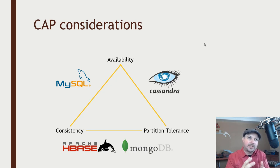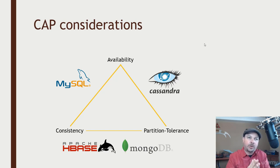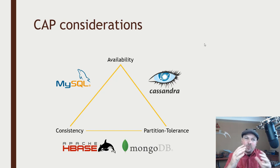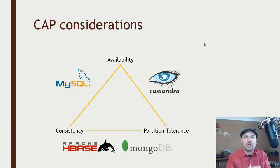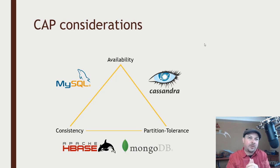Consider Cassandra — is it really trading off consistency for availability and partition tolerance? You can actually configure the amount of consistency you want from Cassandra. You can tell it you want to get back the same result from every replica before you consider that transaction final. If you're running it in that mode, you're kind of getting all three to some extent. So this triangle isn't quite as distinct as it used to be. The lines are getting blurred between these different tradeoffs over time, and the honest truth is any of these technologies can be made to work in pretty much any situation if you try hard enough.